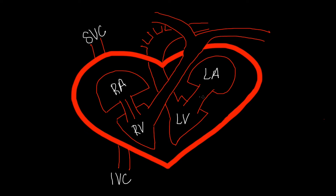And then these are our valves — I kind of like to think of them as hallways. This is going to be our tricuspid — so I'll put TRI, tricuspid — and this one is going to be our mitral, also called our bicuspid. Tricuspid means three cusps, because of the three leaflets that are in this valve — that's why I drew three here, just to get a visual. And then the bicuspid would mean that there are just two.